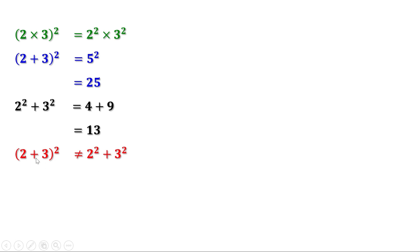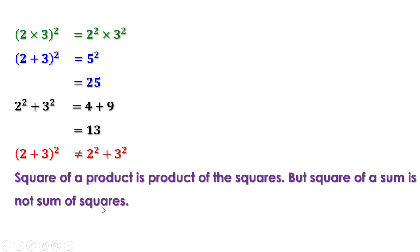Why? Because (2 + 3)² = 2² + 2 × 2 × 3 + 3², and the extra term 2 × 2 × 3 makes the difference. So: the square of a product is the product of the squares, but the square of a sum is NOT the sum of the squares.